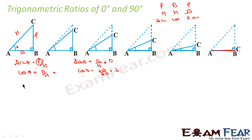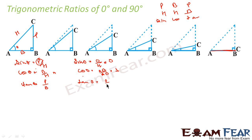Tan theta is equal to p by b. Therefore, tan 0 is equal to — p will be 0 because p (which is BC) is almost 0 here. So 0 by b, where b is AB, that is 0. So I have got the values of sin 0, cos 0, and tan 0.